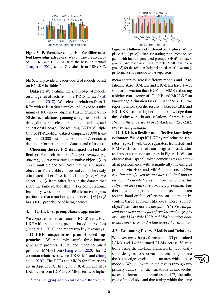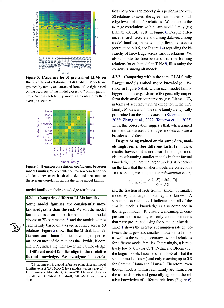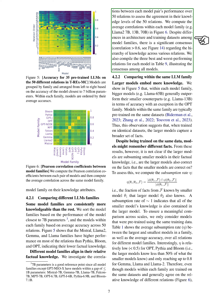In this section, we compare different families of large language models. We rank these model families based on their performance on various tasks. We observe that some families like Mistral, LLaMA2, Gemma, and LLaMA generally outperform others like Pythia, Bloom, and OPT, indicating their higher factual knowledge. Despite differences in their structures and training data, there is consistent agreement on the hierarchy of knowledge across different tasks. Larger models within the same family tend to have more knowledge embedded in them compared to their smaller counterparts, except for the OPT family.